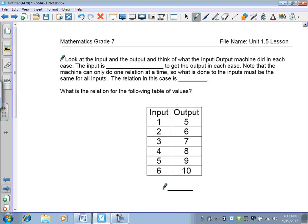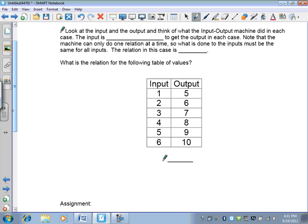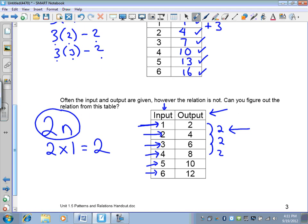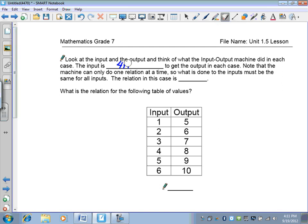So you've done that correctly. Next page. Look at the input output of this table here. Oh sorry, this is for the last one on the previous page. Sort of a summation. So you take 2 times n. So in this one here, it was just sort of cleaning things up with a little bit of a discussion. This is 2n. So it's saying look at the input and output and think about what the input and output machine did. In each case, the input is 2n to get the output. So note that the machine can only do one relation at a time. So what is done to the inputs must be done for all the inputs. So the relation in this case is 2n.